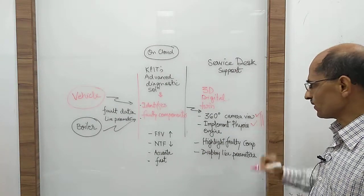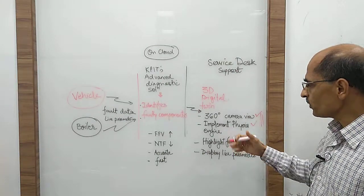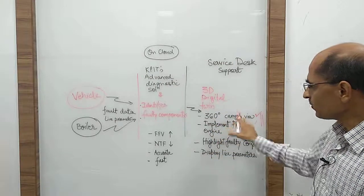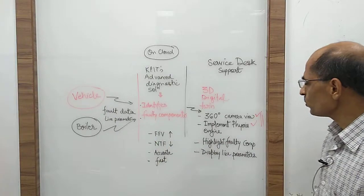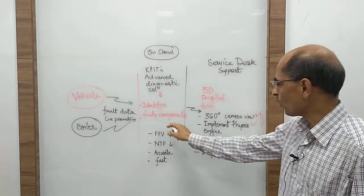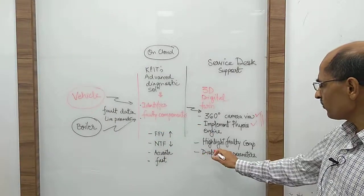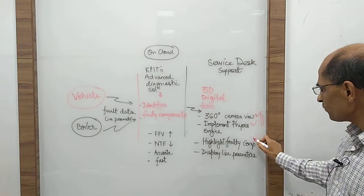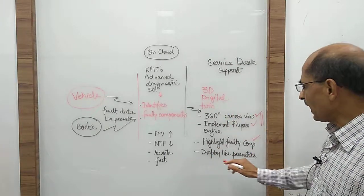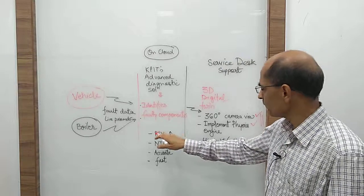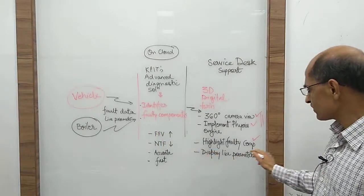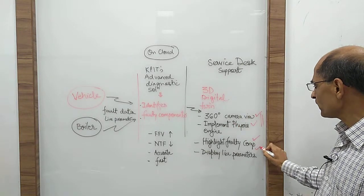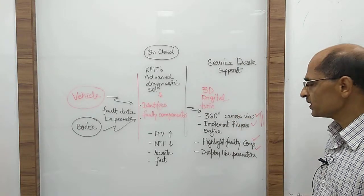The second milestone will be the next step. Once you have this working, then KPIT's diagnostic tool will provide you with the fault data, and this fault data will be used to highlight the faulty component within the 3D model. And also we will provide you with the live parameters, and this model should display these live parameters on this digital twin.